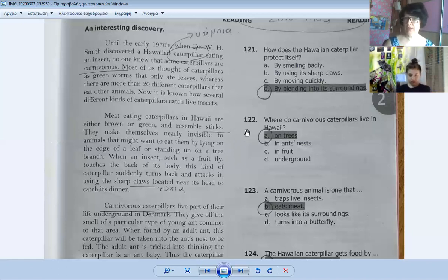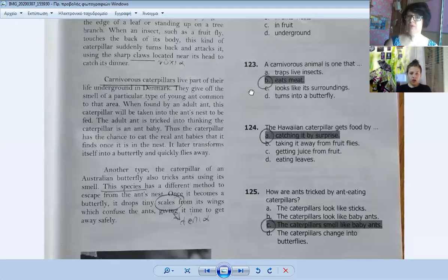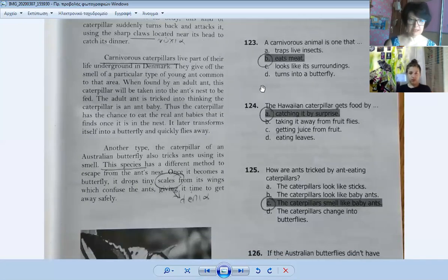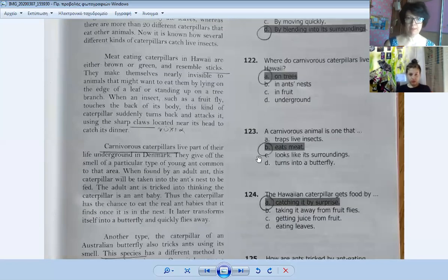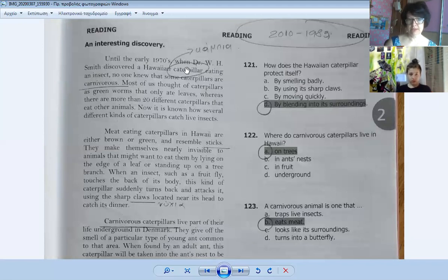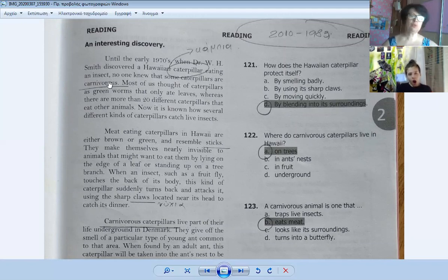How does the Hawaiian caterpillar protect itself? It's D: by blending into its surroundings. Where do you find this? They make themselves nearly invisible to animals that might want to eat them by lying on the edge of a leaf or standing up on a tree branch. Question 122: where do carnivorous caterpillars live in Hawaii? On trees - you can see it in the same sentence.